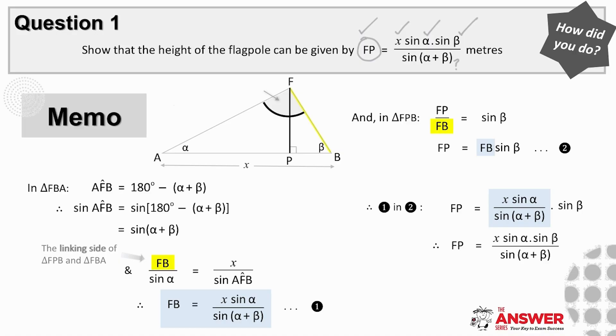If we look at our non-right-angled triangle AFB, this angle here is 180 minus alpha plus beta, which means sine of angle AFB is sine of 180 minus alpha plus beta. This then reduces to sine of alpha plus beta. And there it is. This also helps us decide on which side now to use as our linking side. In this example, you can in fact choose between FA and FB to be the linking side. We've decided to use FB as our linking side.